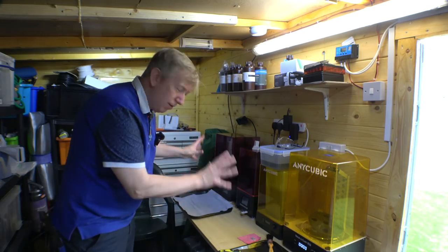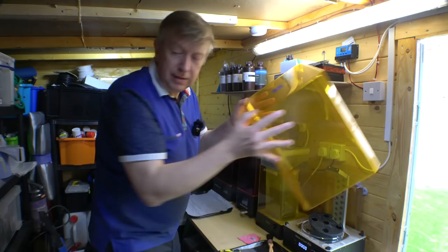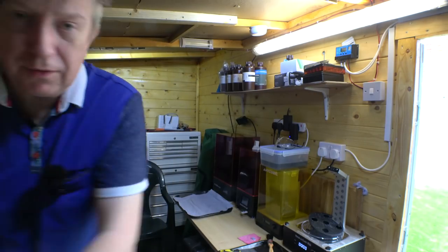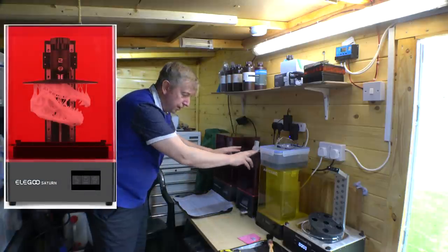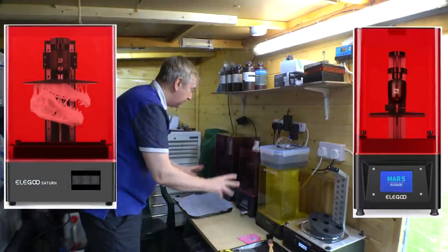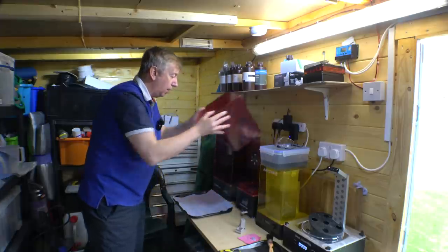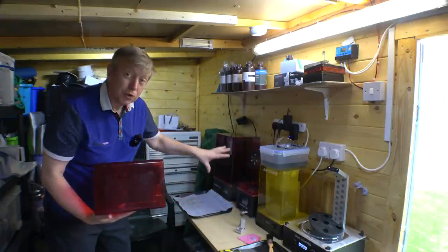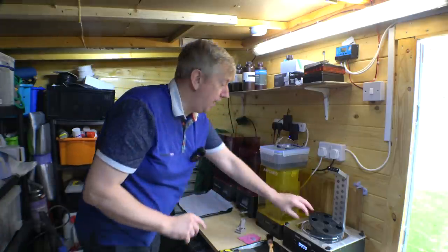Okay, so this is the resin printing station. Basically I've got two resin printers. I've got an Elegoo Saturn and an Elegoo Mars, and one's obviously a lot smaller than the other. I started off with the Mars, discovered how good resin printing was, and went for the bigger model which is the Saturn.